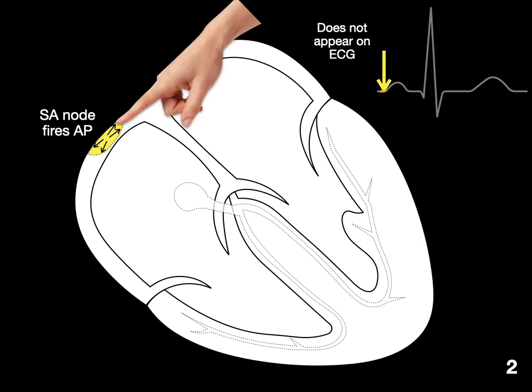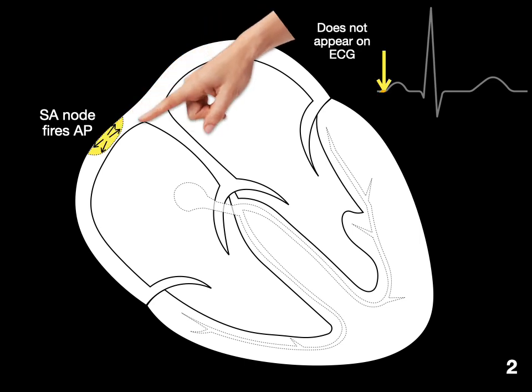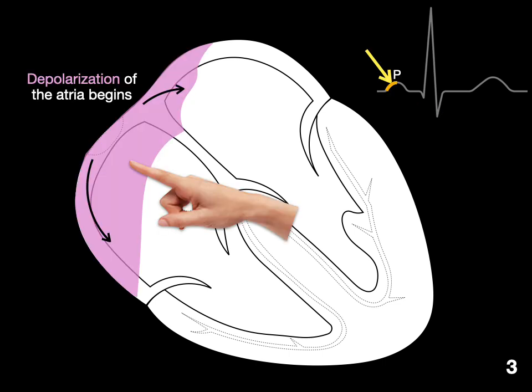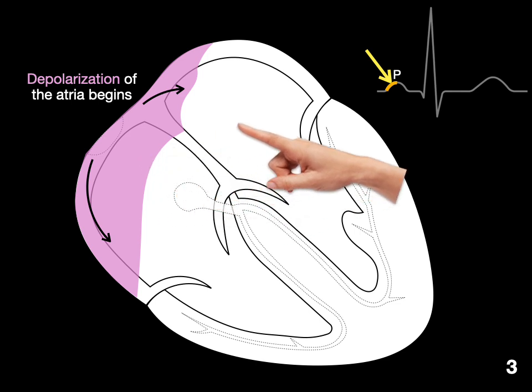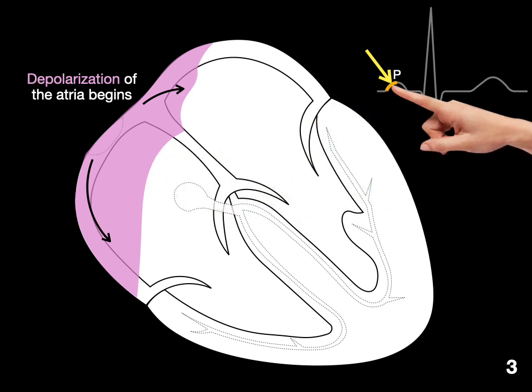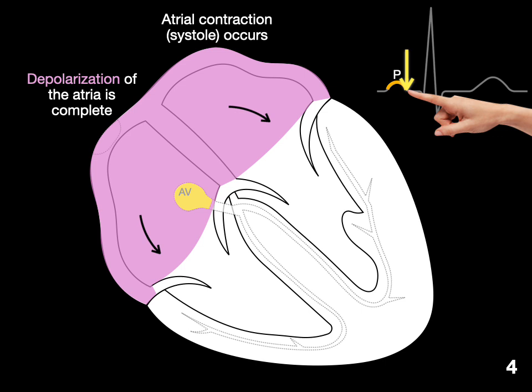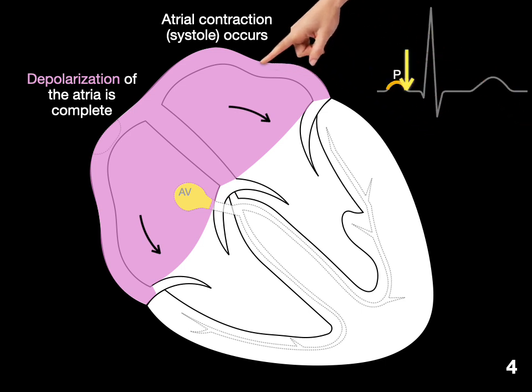The SA node fires an action potential, but when that occurs, you do not see anything on an EKG or ECG because the tissue mass is so small. But you can see the effect of it by causing the depolarization of the atria beginning. So part of the atria is depolarizing where the other part isn't, which is why we get this beginning of a P wave. Once the depolarization is complete, then we see the end of the P wave, and that's when we have atrial contraction or atrial systole occurring.